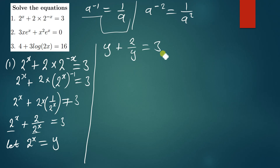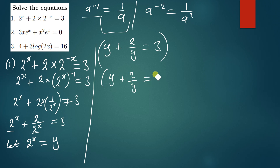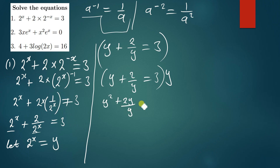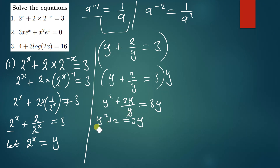To get rid of the y in the denominator, we multiply the whole equation by y. So: y times y gives y squared, then 2 times y over y gives 2 — the y's cancel — and this equals 3y. So we remain with y squared plus 2 equals 3y.